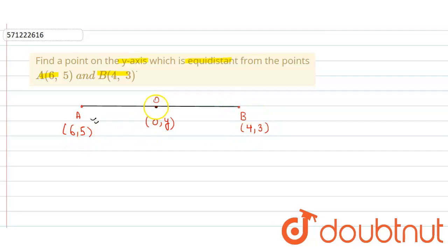We assume the coordinate of point O which is equidistant from both point A and B. That point lies on the y-axis, so the x-coordinate is 0. Now we apply the distance formula.